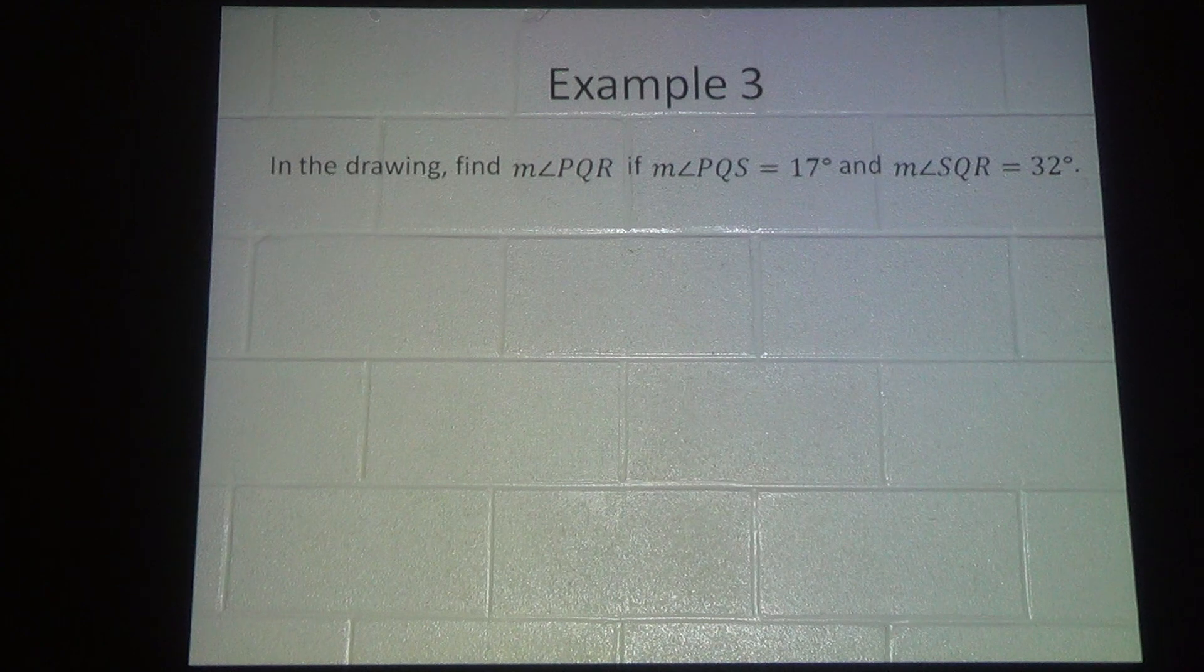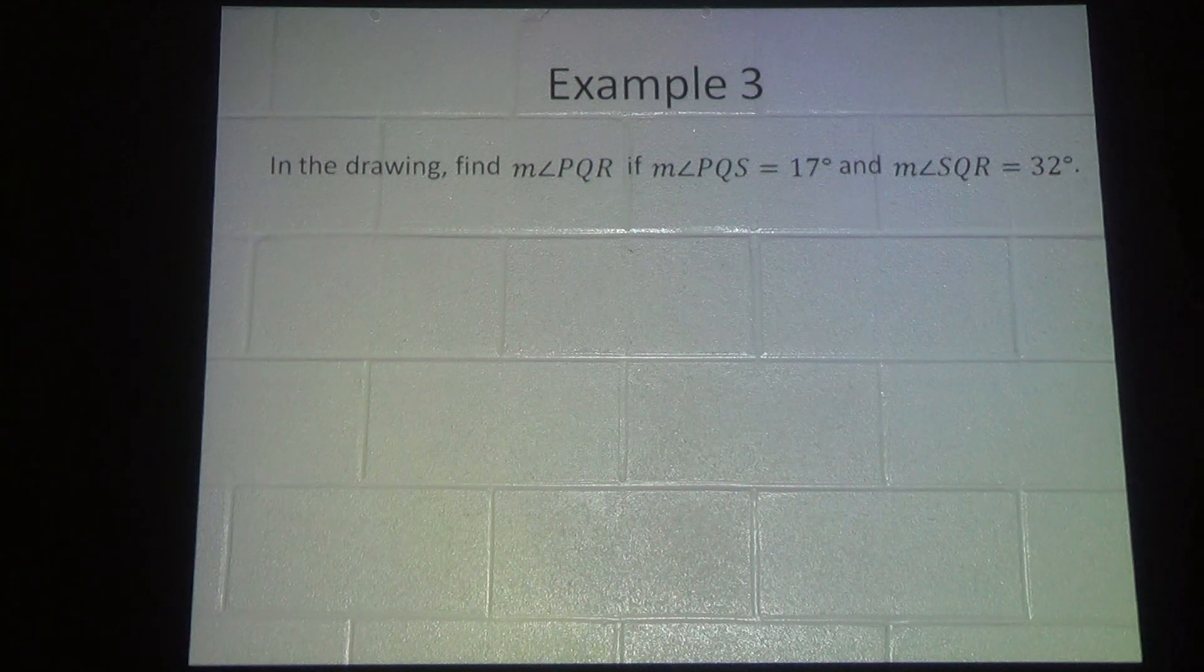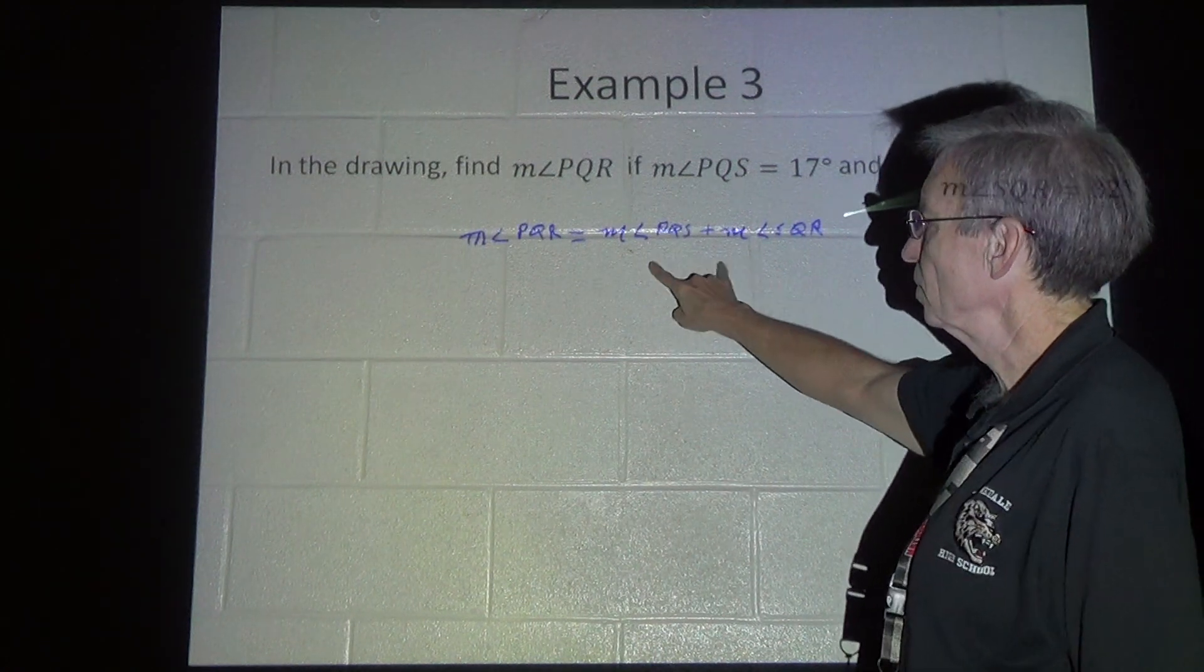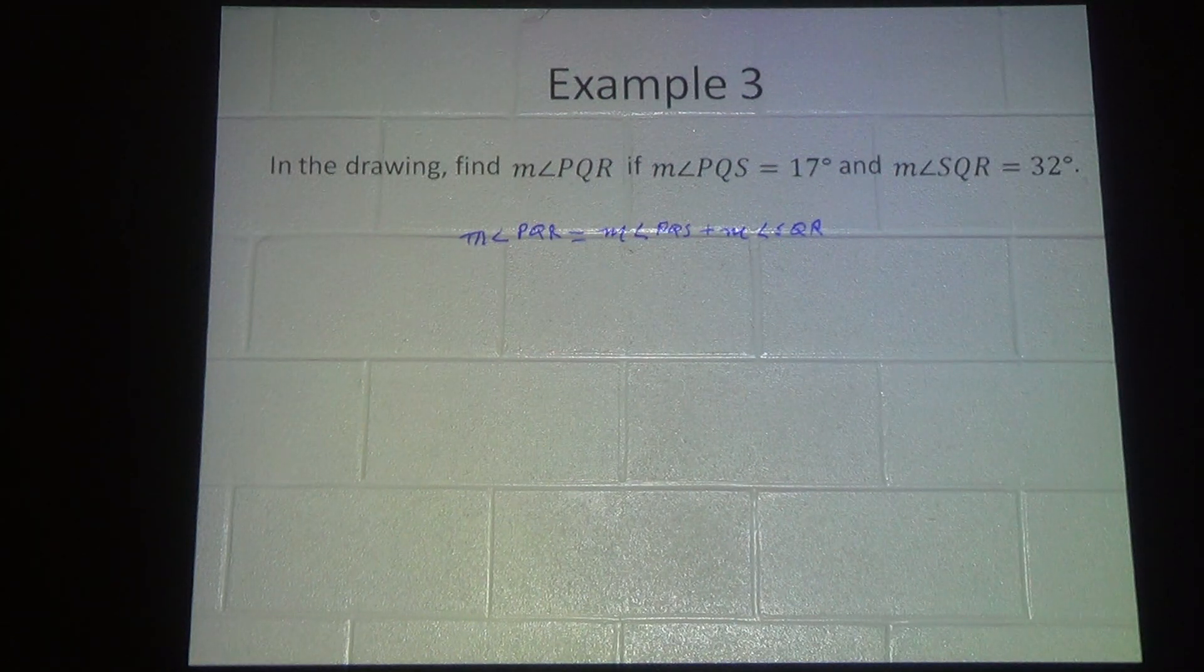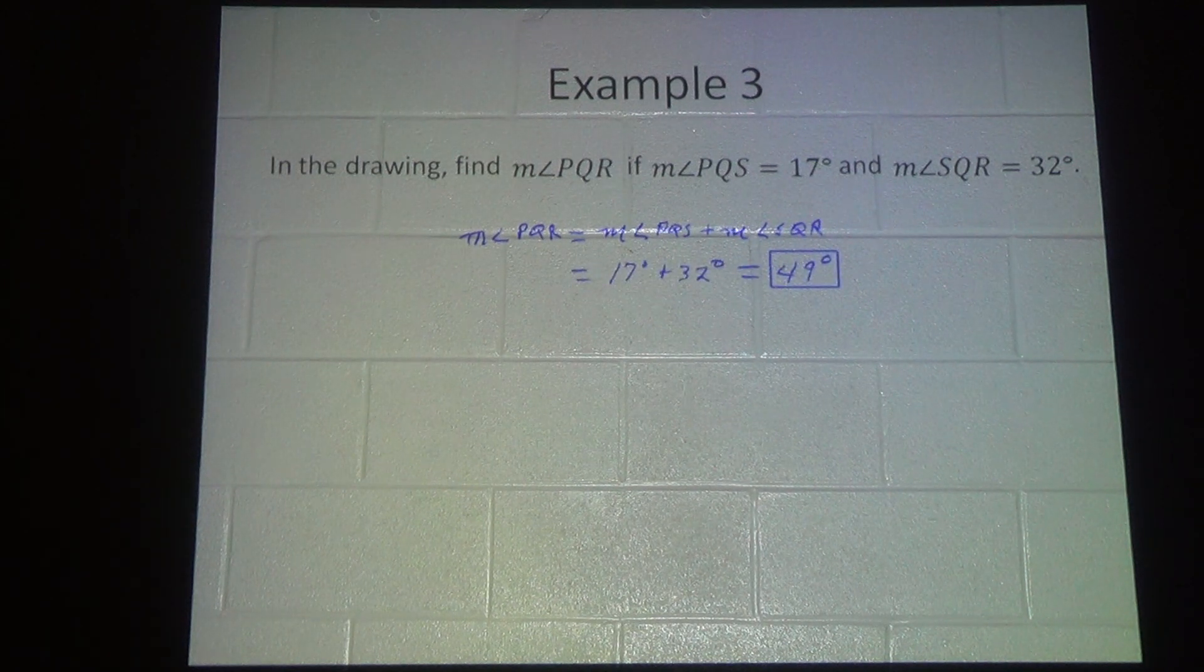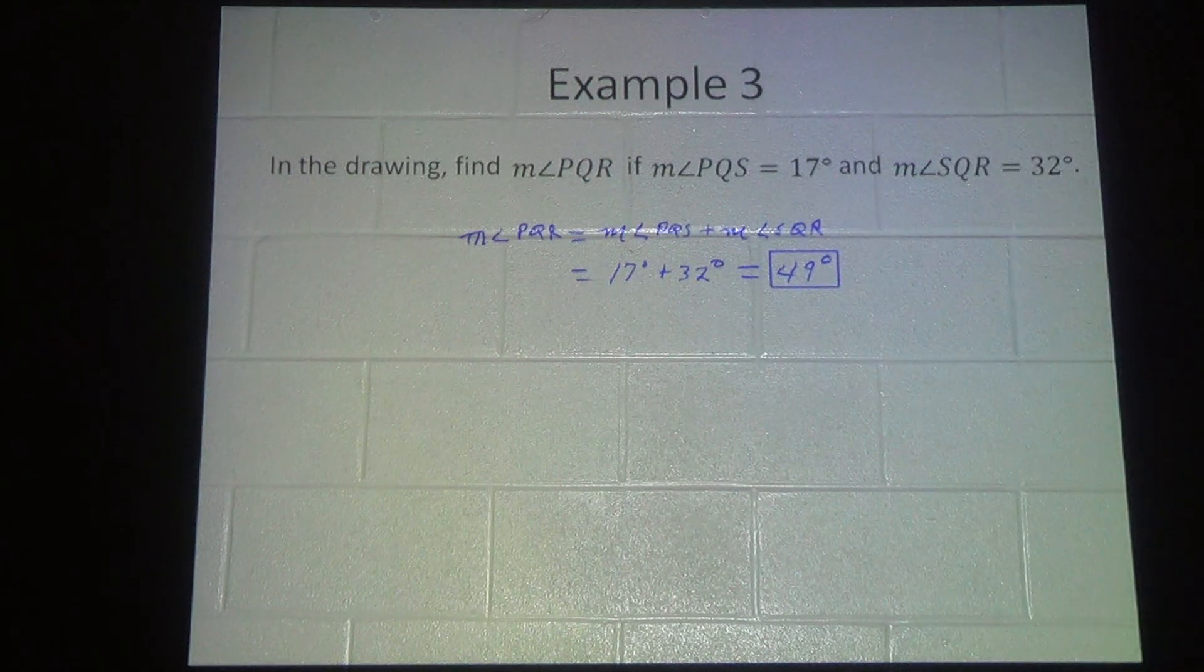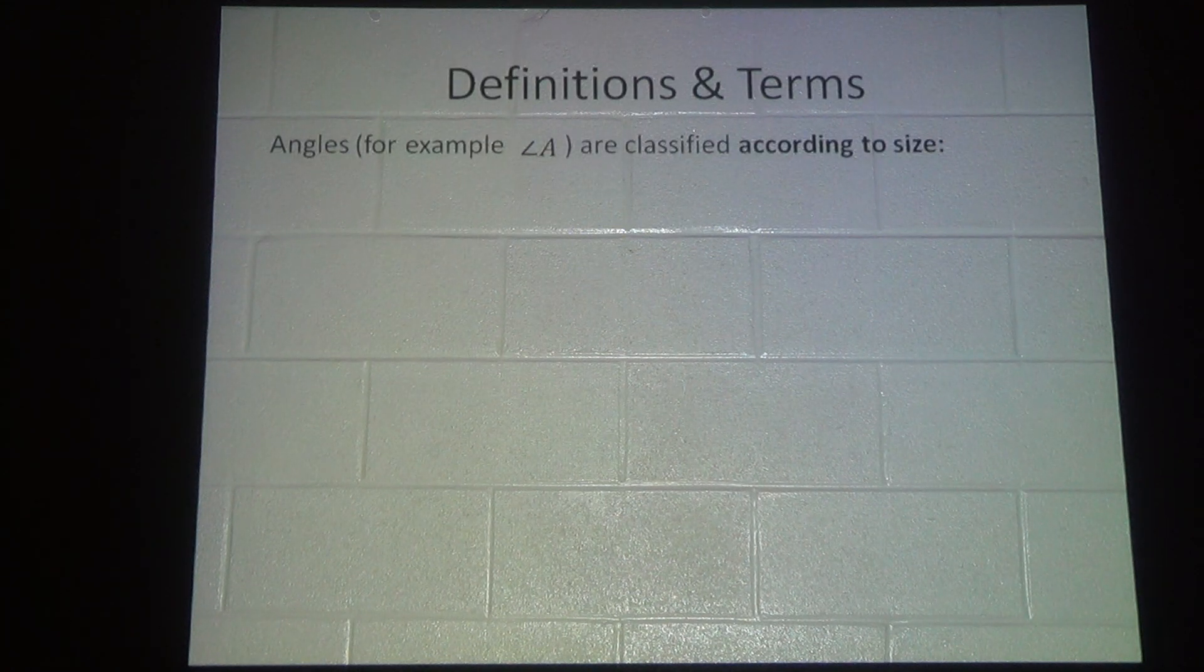In this drawing, they want us to find the measure of angle PQR if the measure of angle PQS is equal to 17 degrees and the measure of angle SQR is equal to 32 degrees. We add those together. The measure of the big angle is equal to the measures of the small angles added together. This gives us 17 degrees plus 32 degrees. When we add those together, the big angle has to measure 49 degrees.